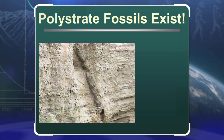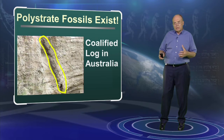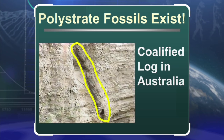In this photograph taken in Australia, you see sedimentary rock layers going across. But do you see this object right here? This is actually my favorite kind of fossil, because what you see there is called a polystrate fossil. I'm showing you the outline so that you can see it a little bit better. This is actually a coalified log. Notice it has no top, no bottom — it's just a coalified log, but it is sticking through many layers.